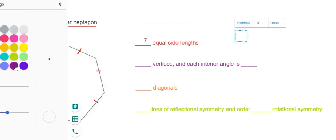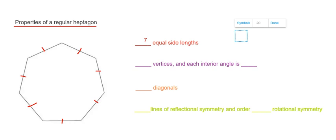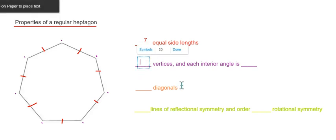Let's have a look at the number of vertices then next. So we have 1, 2, 3, 4, 5, 6, 7. So we have 7 vertices. And the size of each interior angle is going to be equal to 128.6 degrees.